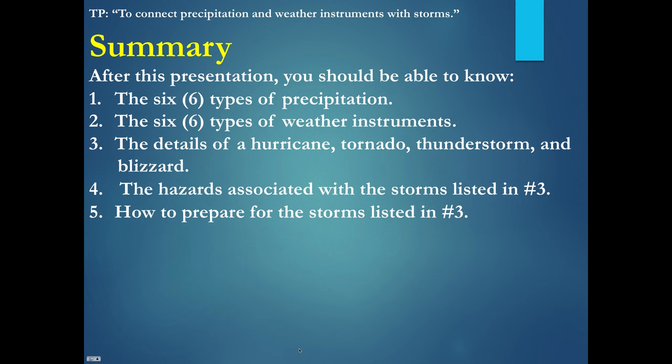To sum up this lesson, we covered the six types of precipitation, the six types of weather instruments, the details of hurricanes, tornadoes, thunderstorms, and blizzards, the hazards associated with each storm, and how to prepare for them. Your guided notes should be filled in. Be ready for some questions for tomorrow's class. Thank you for your time, see you tomorrow. Bye.